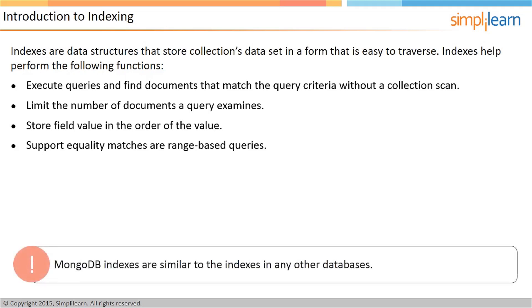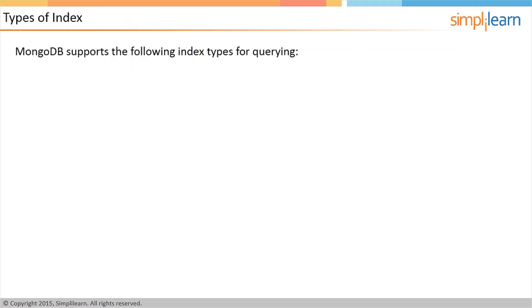The indexes of MongoDB are similar to the indexes in any other database. MongoDB defines indexes at the collection level for use in any field or subfield. MongoDB supports the following index types for querying.